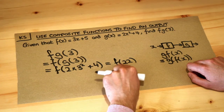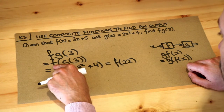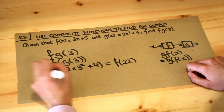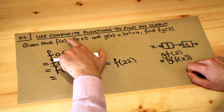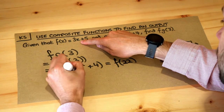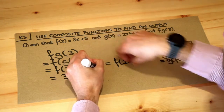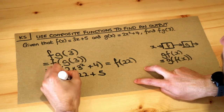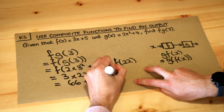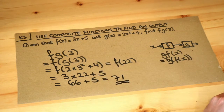And now we're going to feed that into f because we're doing f of g of 3. So what's f(22)? We just do 3 times 22 plus 5 using the f function. So that's 66 plus 5, which is equal to 71. And that is the final answer.